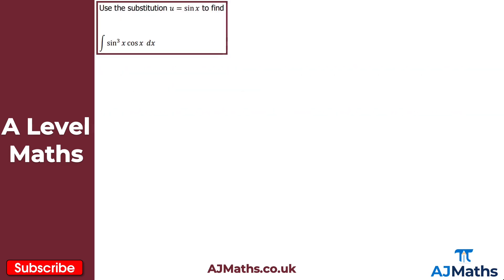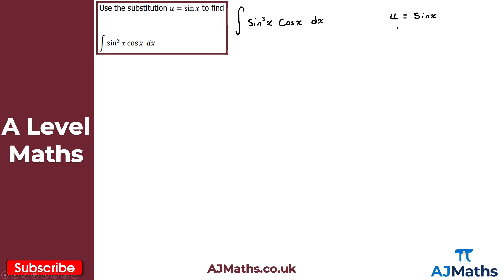For question 1, we want to use the substitution u = sin x to find the integral of sin³x · cos x dx. Let's start by writing down the original integral: sin³x multiplied by cos x with respect to x. We're also using the substitution u = sin x, so let's write that down as well.